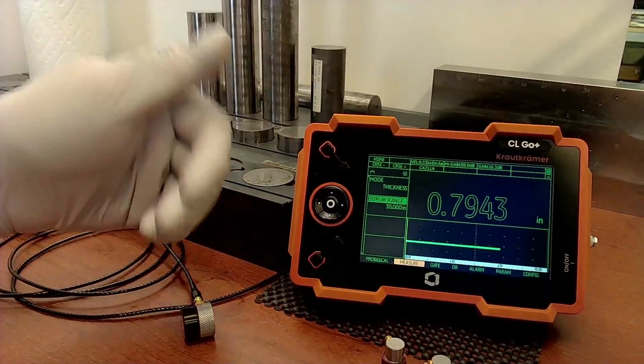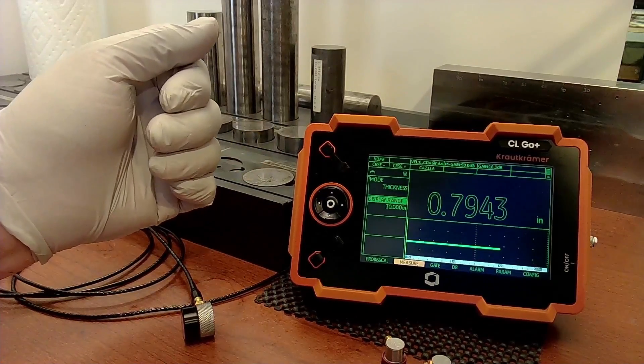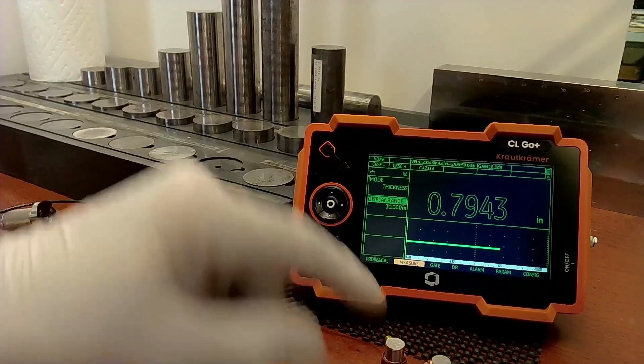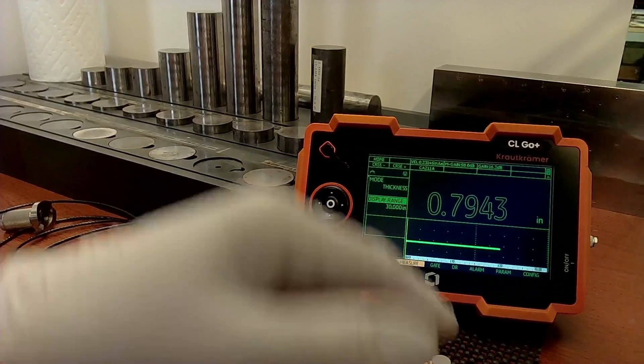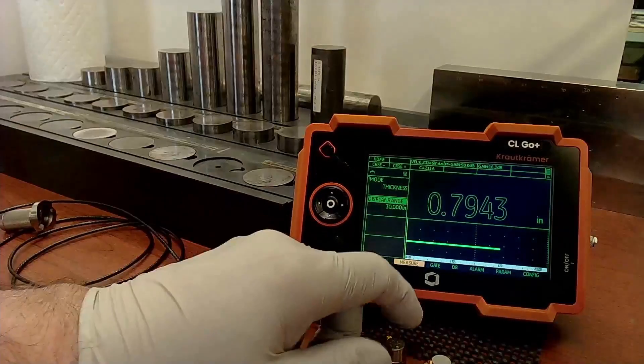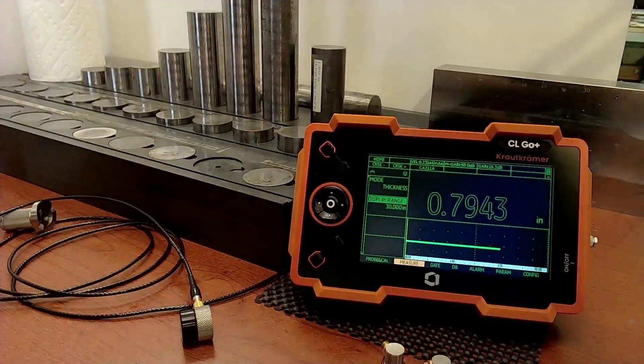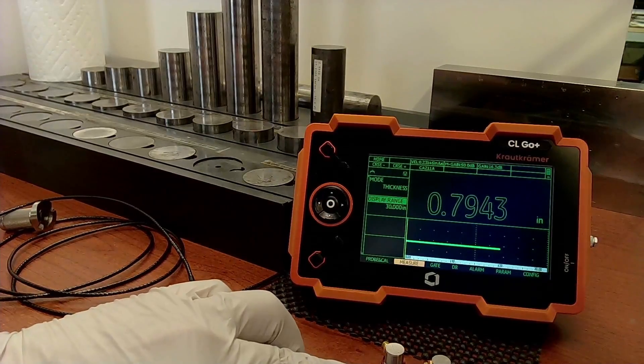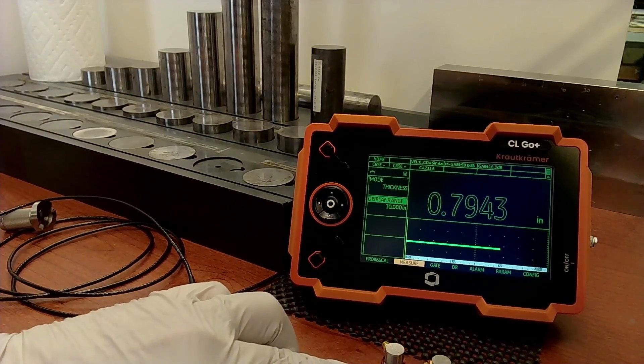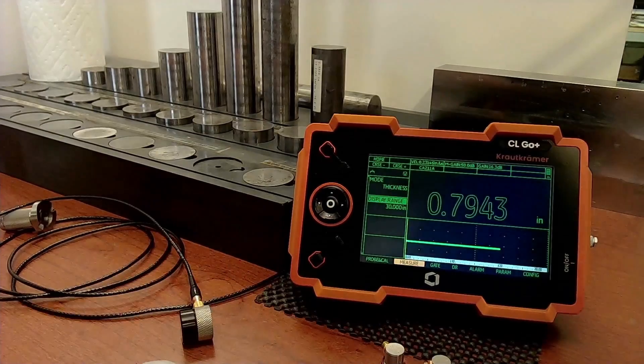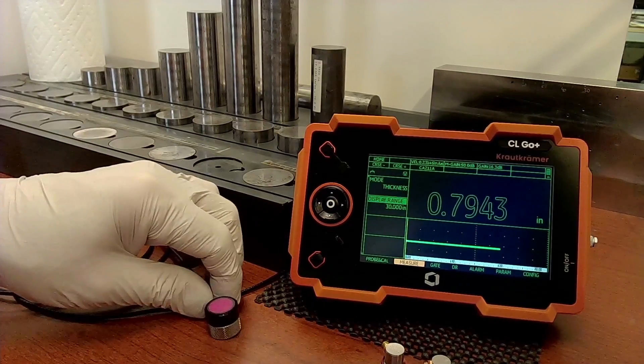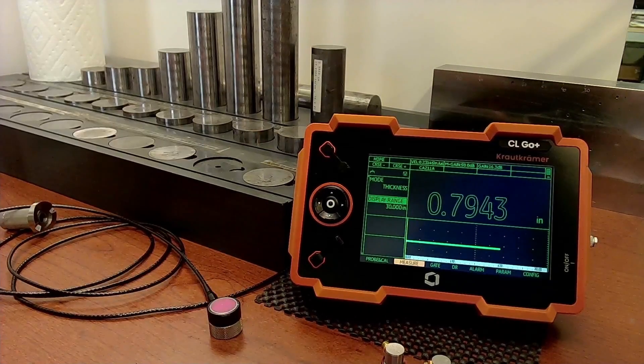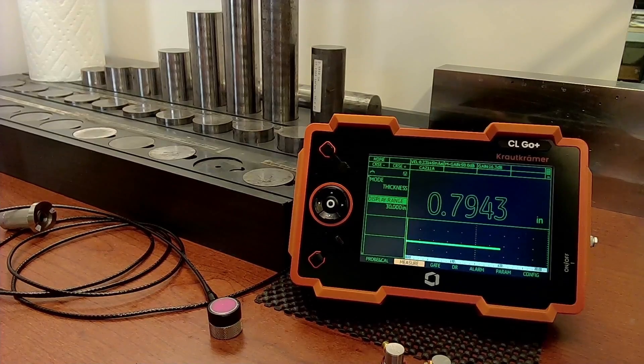Just select a probe. Run through the calibration process that's appropriate for that probe. Again, the direct contact probes will use the zero block. Delay tip probe. The Alpha 2 DFR uses interface start mode on the delay tip. So we don't need to zero that probe. All we need is one sample for velocity. And the instrument is calibrated.